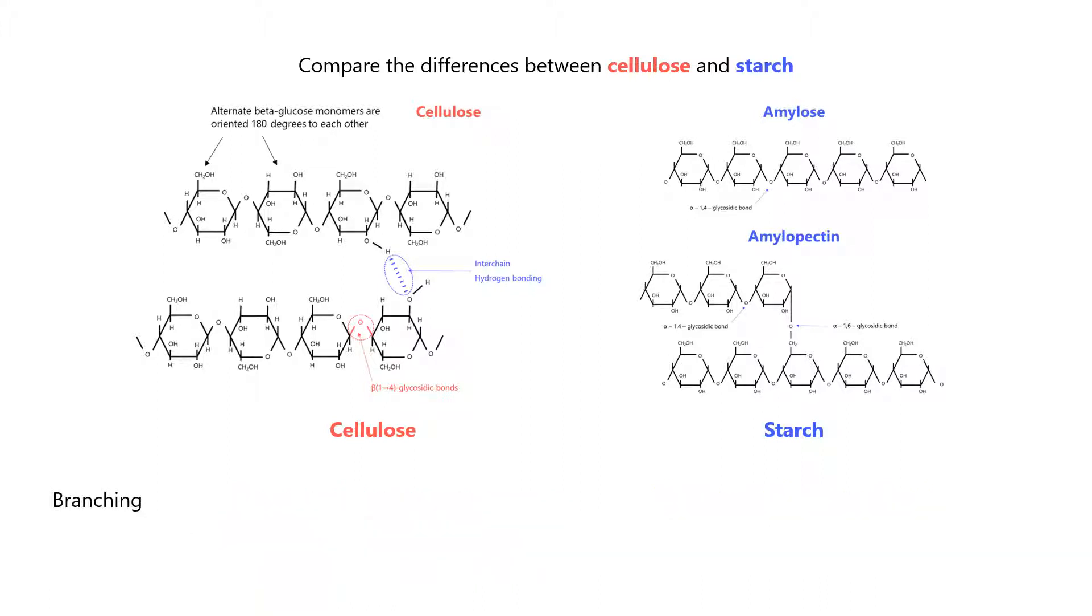Lastly, let's compare whether branching occurs in the molecules. There is no branching in cellulose. On the other hand, branching occurs in amylopectin.